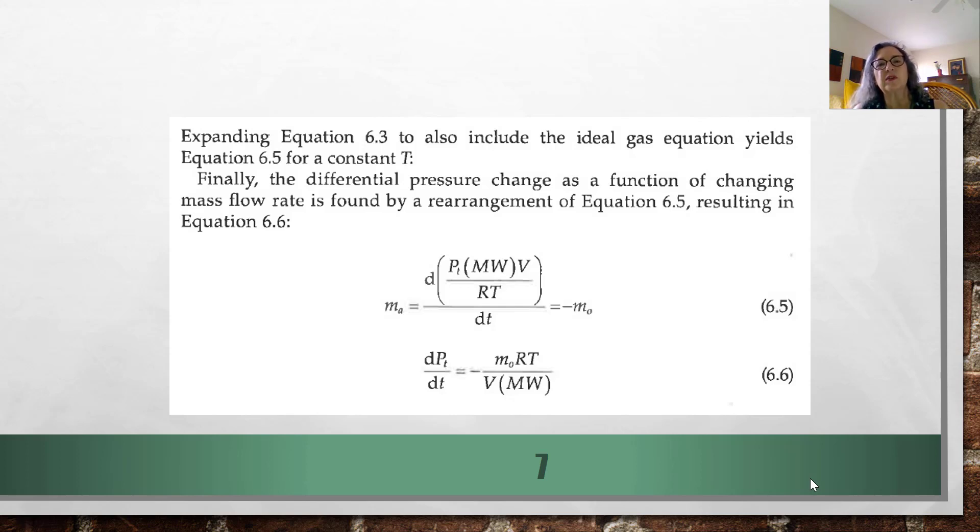Now going through and combining these things and doing some rearranging, what we can end up with is that the change in pressure in the tank with time is the negative of the mass flowing out times RT over the volume of the tank times the molecular weight.